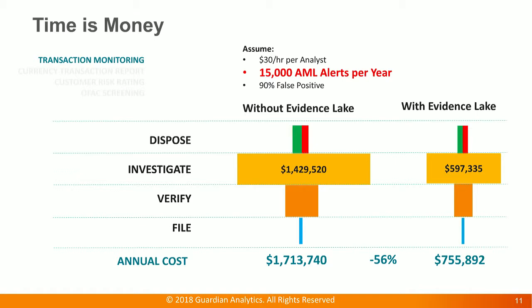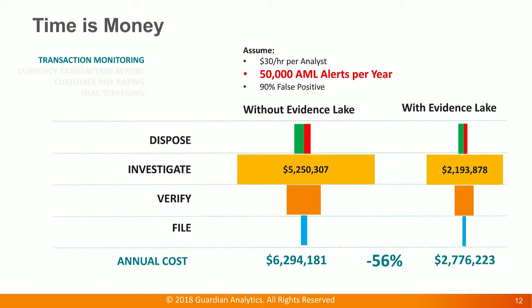Taking a larger example, let's say you have 50,000 alerts per year. Putting it into our TCO calculator, we can get a cost of around $6.2 million, whereas with Evidence Lake, you can reduce that cost again by 56% to $2.7 million.